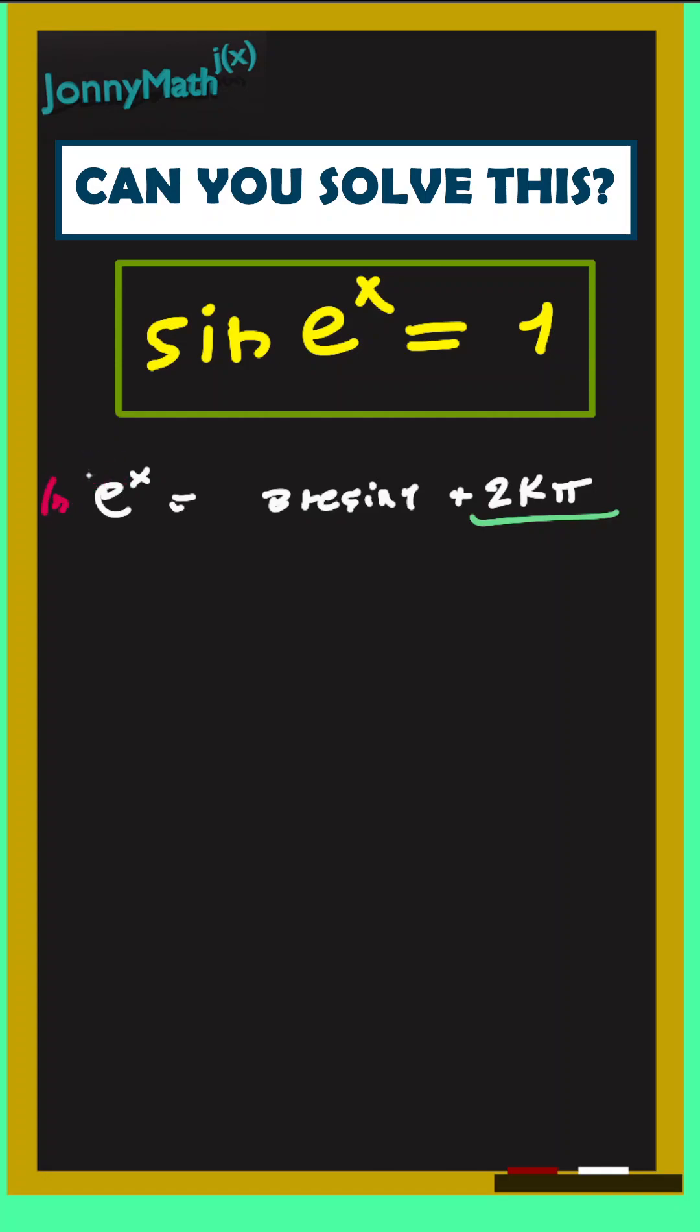Now we can apply the natural log to both members and we get that x is equal to the natural log of the arcsine of 1, that is equal to pi over 2 plus 2k pi.